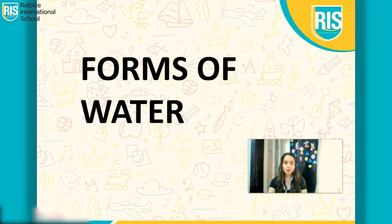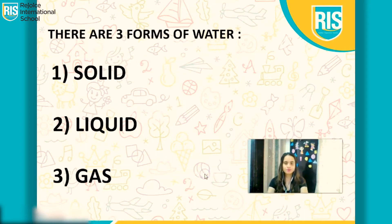So, today we are going to learn about Forms of Water. There are three forms of water. The first one is Solid, the second one is Liquid, and the third one is Gas. Now I am going to explain what is Solid, what is Liquid, and what is Gas.